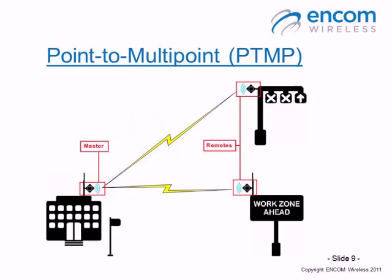The following illustration shows a point-to-multipoint network with one master communicating to two remote locations out in the field. You can also have more complex point-to-multipoint networks and different variations on network design, all of which will be discussed in further instructional videos. For now, point-to-point and point-to-multipoint are the key fundamentals to understand.